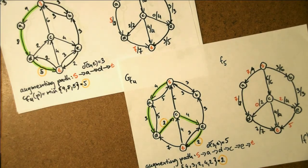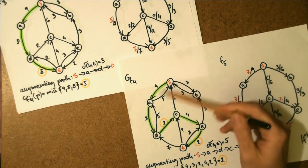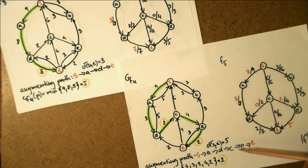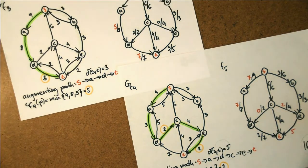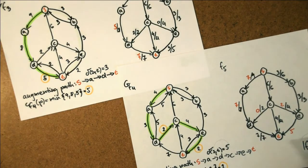Our new residual network GF4 shows us that there is still a way to augment the flow, but this time the path is slightly longer. Namely, this is SADCET of length 5 and residual capacity 2. We now augment the flow again, but here it's important to note that since we've traversed the reverse edge DC, we now subtract the value 2 of the residual capacity of the augmenting path from the edge CD, and we actually reduce its flow from 2 to 0.